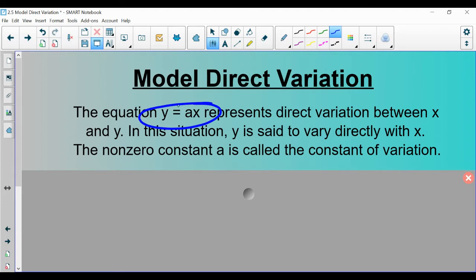Essentially what this is, it really looks like y equals mx plus b, but there is no b. There's nothing that's being added or subtracted in this problem, and therefore the y-intercept, because b is the y-intercept, the y-intercept is zero.